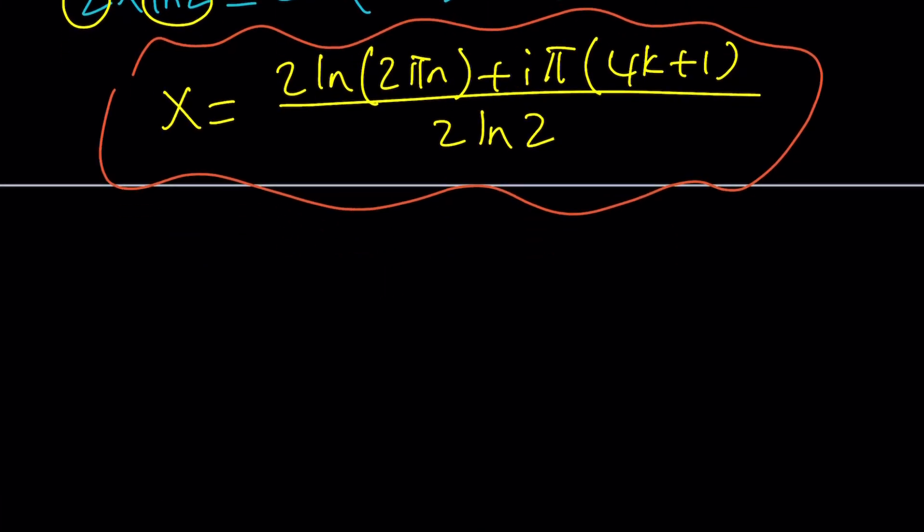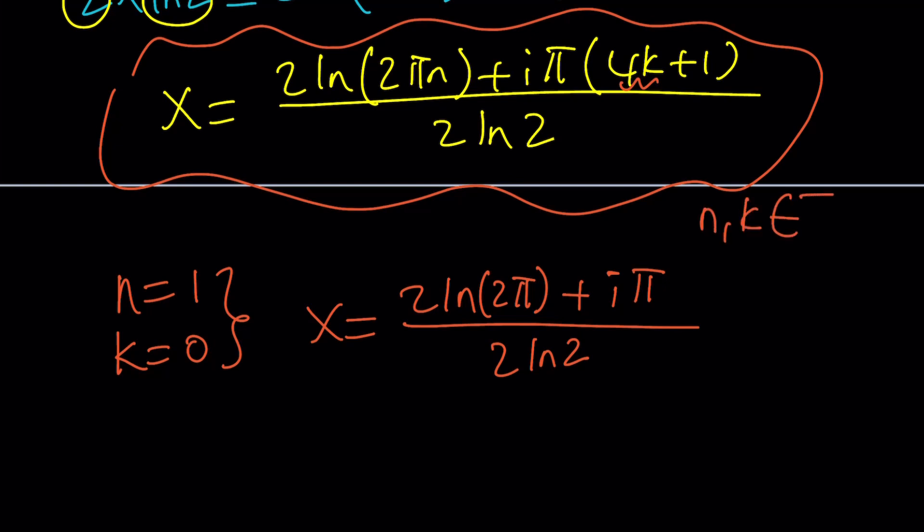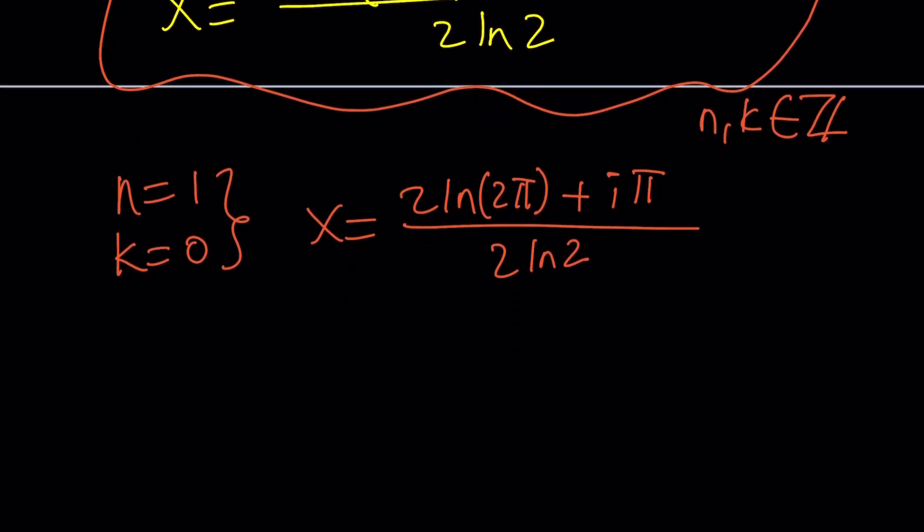Now, let's go ahead and look at some specific values, such as what happens if n is equal to 1 and k is equal to 0. That's probably going to be the simplest scenario. So, x is going to be 2 ln 2 pi. Notice that it doesn't disappear. It's not ln n. It's ln 2 pi n. Plus, here, if you replace k with 0, you're going to get i pi. And divide it by 2 ln 2. And this is going to be one of the many solutions. Obviously, there are infinitely many solutions for all different values of n and k as integers. Again, n and k are integers. They don't have to be positive. They're integers. Okay? So, that's kind of like a simple scenario. Let's go ahead and plug this in because the other one is going to be a little bit more work. But you can do it too. Okay? As an exercise. Right? Okay. Let's go ahead and do this.